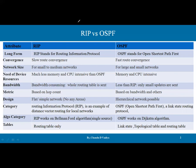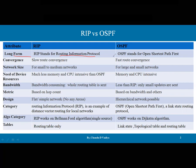The first parameter to differentiate RIP and OSPF is the long form. RIP stands for Routing Information Protocol, whereas OSPF stands for Open Shortest Path First.